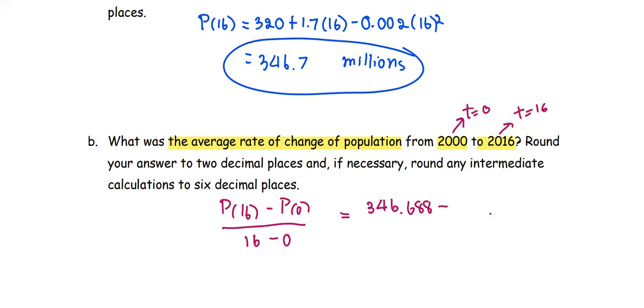From the model on the side notes, P(0) is 320 + 1.7×0 - 0.002×0², or P(0) is 320.